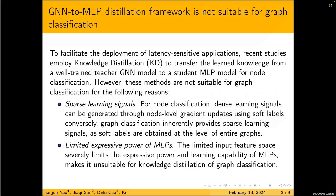We found that recently proposed GNN2MLP KD frameworks are not suitable for graph classification for the following two reasons. First, for node classification, dense learning signals can be generated through node-level gradient updates using soft labels, but this is not the case for graph classification. Second, the limited input feature space limits the learning capability of MLPs, making it unsuitable for KD of graph classification.